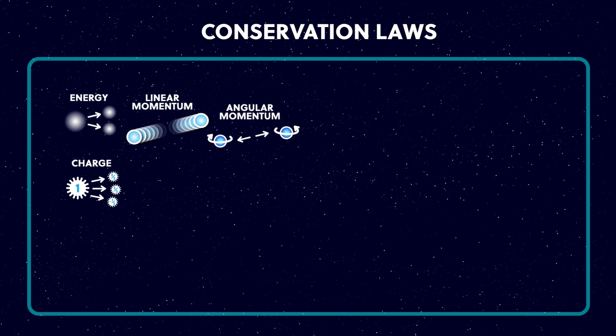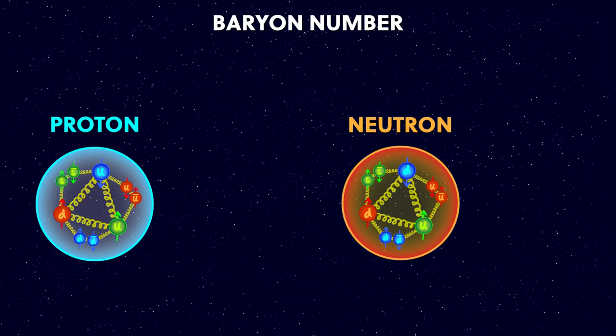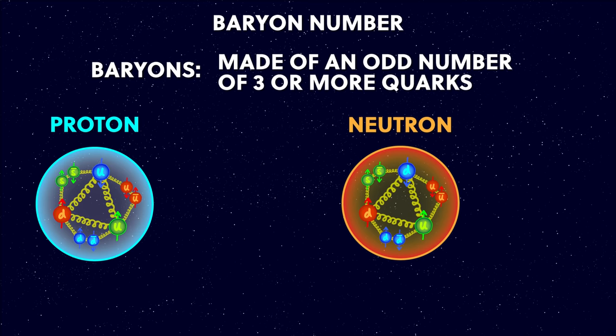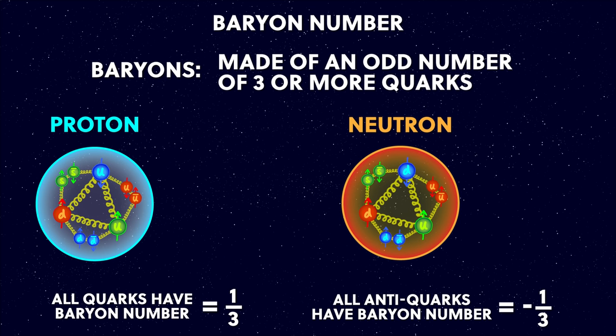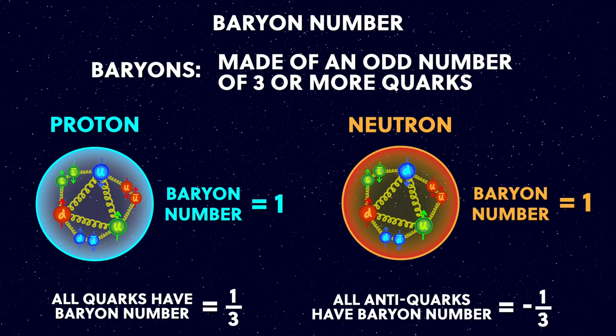From the quarks we've got a couple more conservation rules to add to the list: baryon number and colour charge. A baryon is any particle made up of an odd number of quarks, but at least three, because quarks can't exist on their own. Baryon number is plus a third for each of the quarks and minus a third for the antiquarks. These add together to give a plus one baryon number for the proton and the neutron, and minus one for antiprotons and antineutrons.